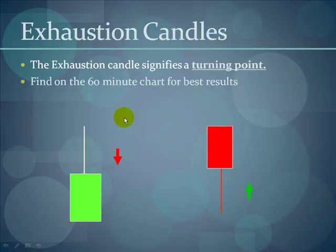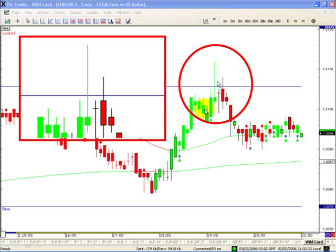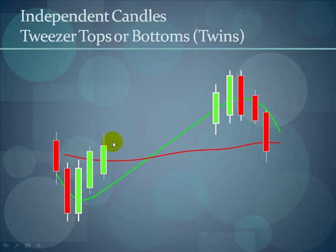Exhaustion candles also signify a turning point and are best found on the 60-minute chart. The market opened, went all the way up, then came all the way back down, closing above its opening — so it's a green candle, but with a huge wick up top. That means they got to a certain price and massive selling took place inside the candle. Conversely, a red candle with an exhaustion wick means massive buying took place — the candle went down to the wick's end and then massive buying closed it below its opening, but it's telling you we're going the other way.